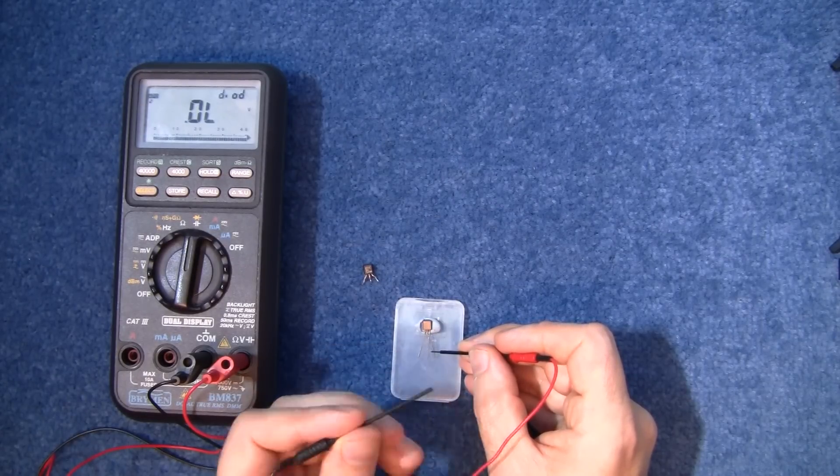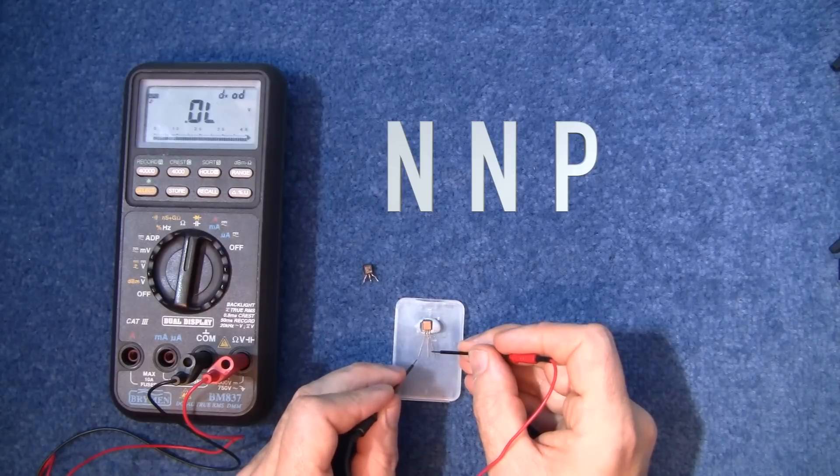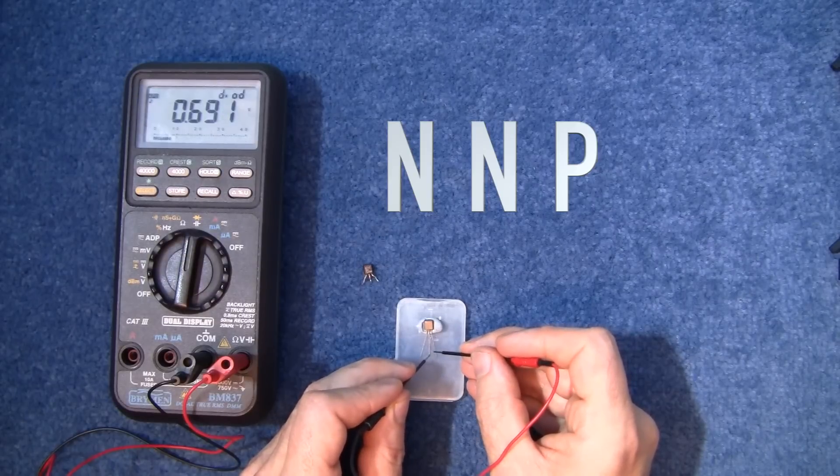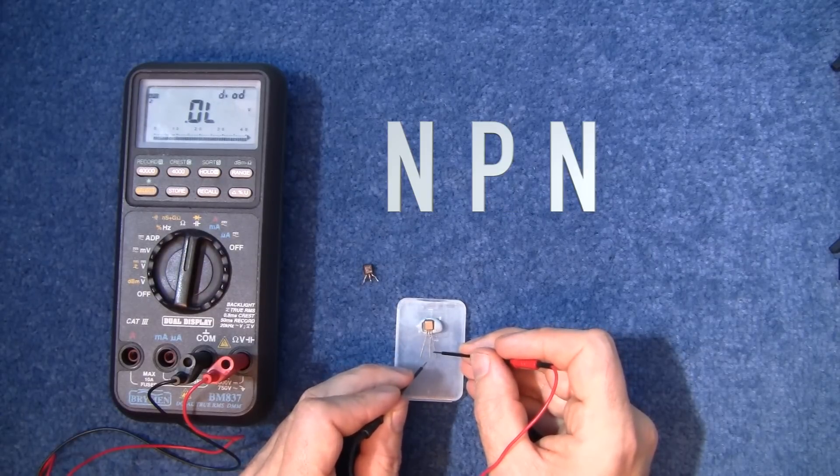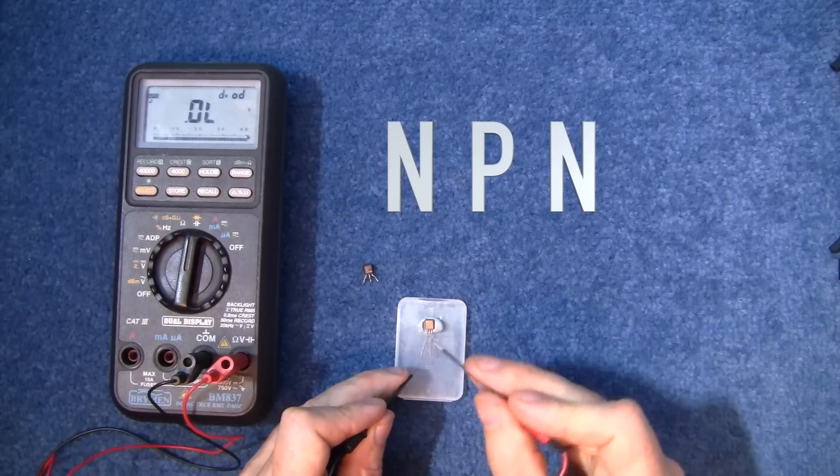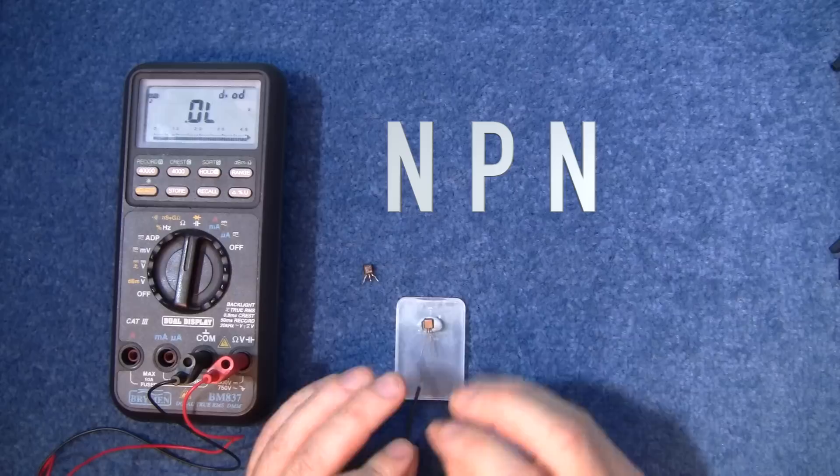So we have two negatives there and there and one positive which is here. So that makes this an NPN transistor and it also makes this single leg here the base.